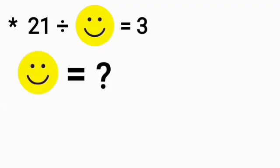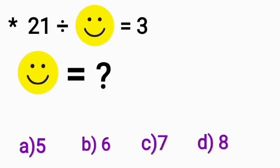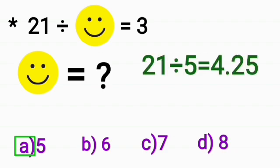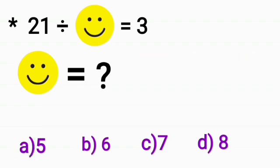21 divided by Smiley is equal to 3. Now, we have to find the value of Smiley. Option A. That is 5. 21 divided by 5 is not equal to 3. Now, we will move to option B. Then, 21 divided by 6 is not again equal to 3.